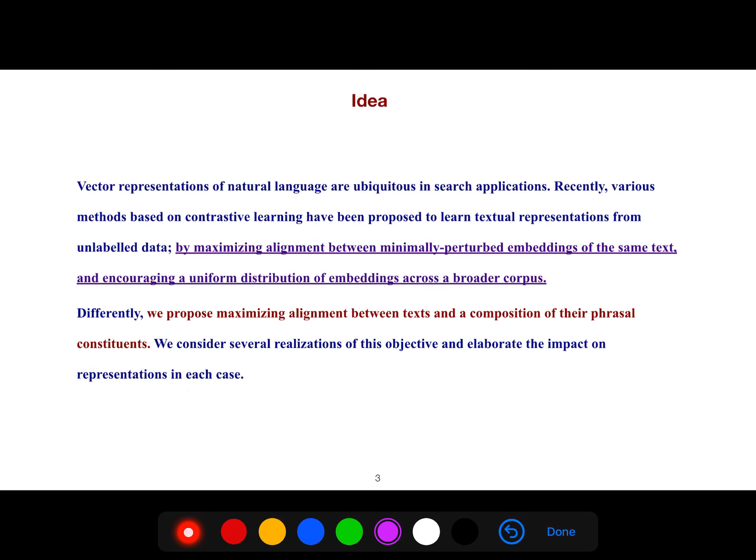Vector representations of natural language are ubiquitous in search applications. Recently, various methods based on contrastive learning have been proposed to learn textual representations from unlabeled data by maximizing alignments between minimally perturbed embeddings of the same text and encouraging a uniform distribution of embeddings across the broader corpus.